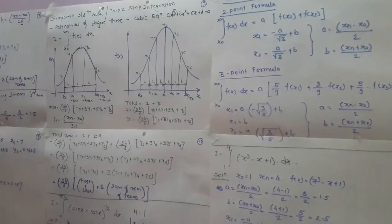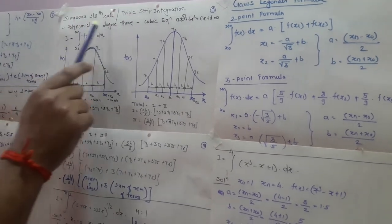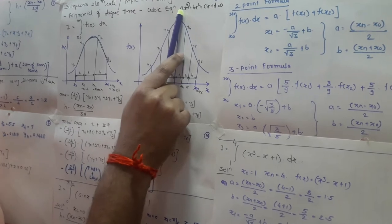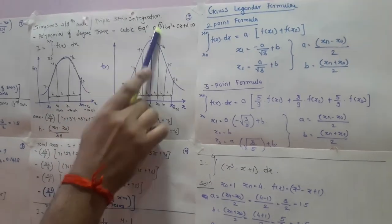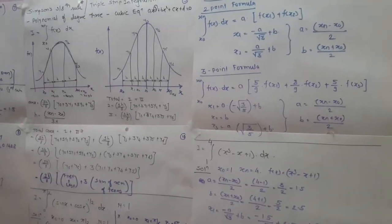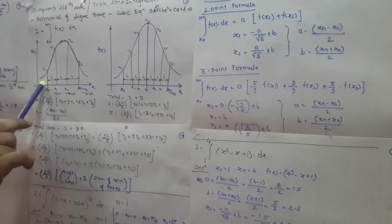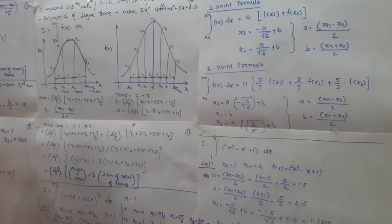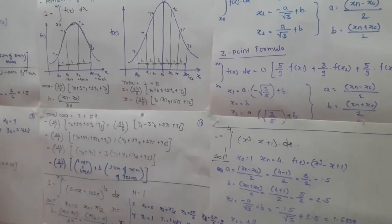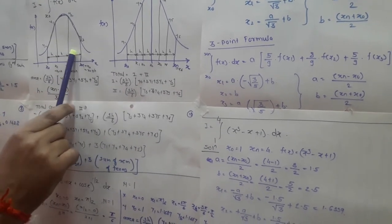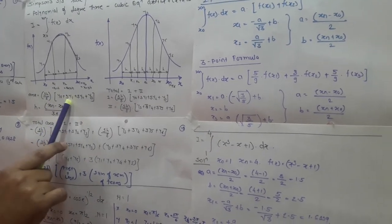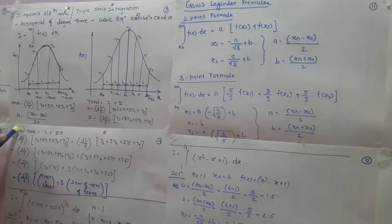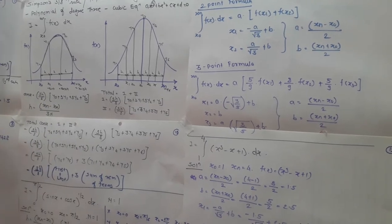Next is Simpson's Three-Eight Rule, also called triple strip integration. It uses a polynomial of degree 3 — a cubic equation in the form ax³ + bx² + cx + d = 0 — where the maximum index is 3. Since the maximum index is 3, it requires a minimum of four points to join the curve. Each major strip is divided into three sub-strips. The formula is: (3h/8) × (y₀ + 3y₁ + 3y₂ + y₃), where h = (xₙ − x₀) / (3m).